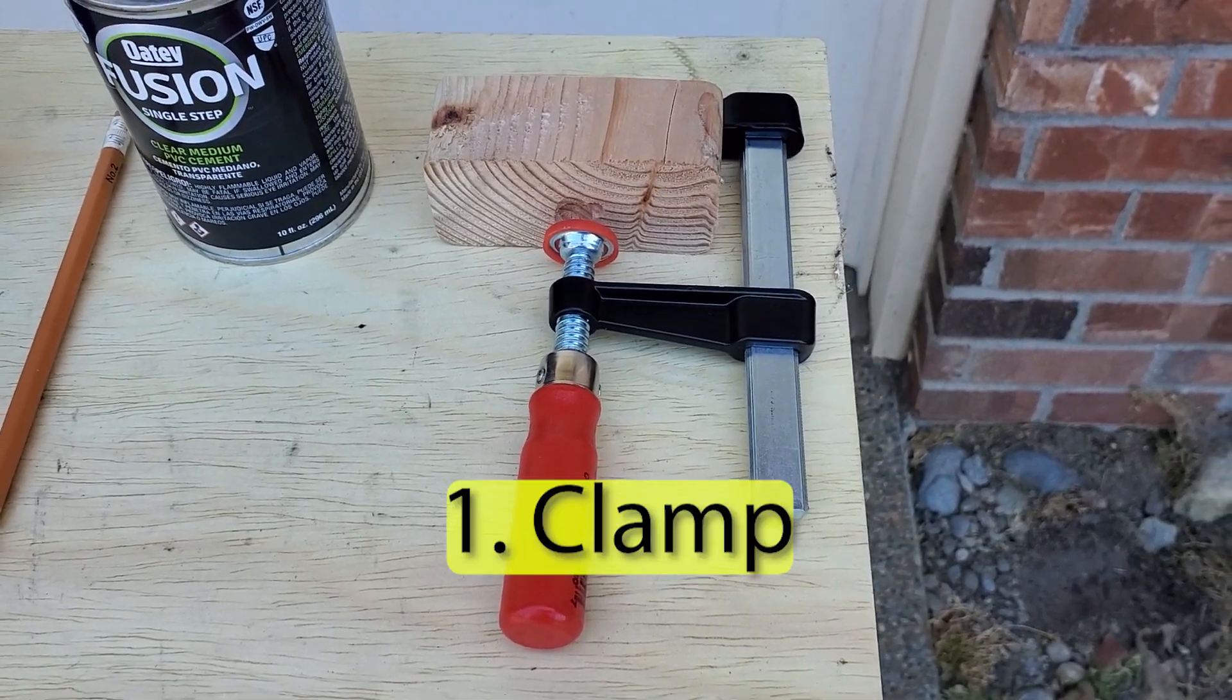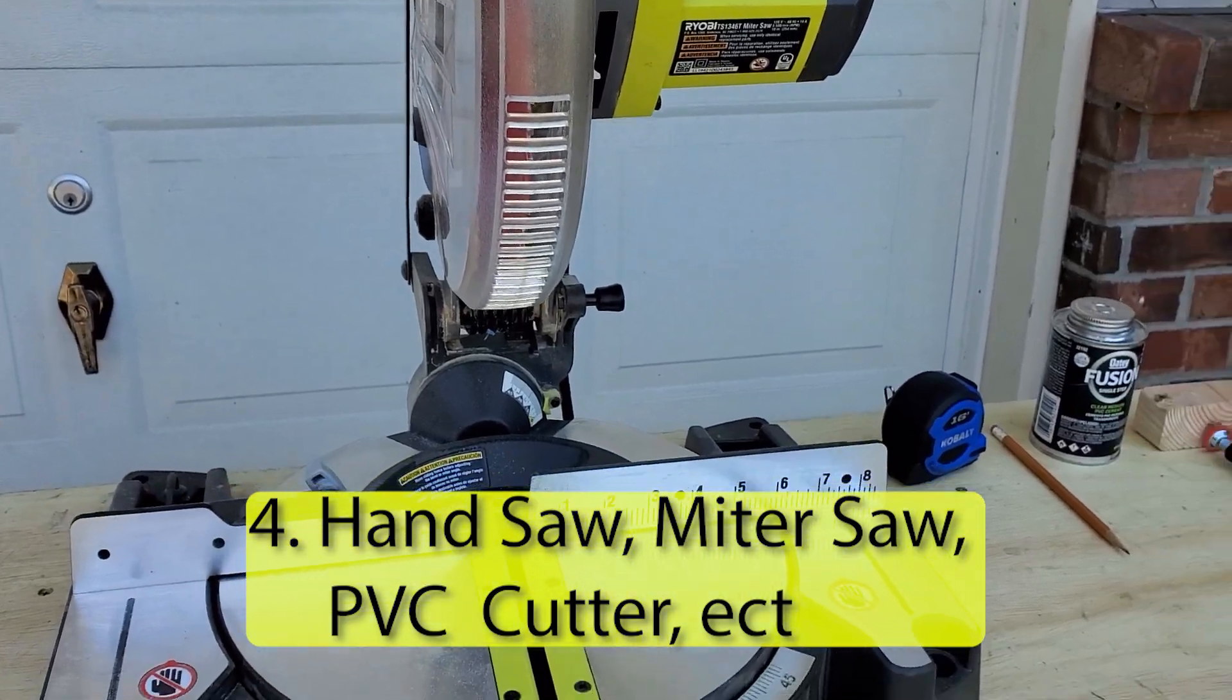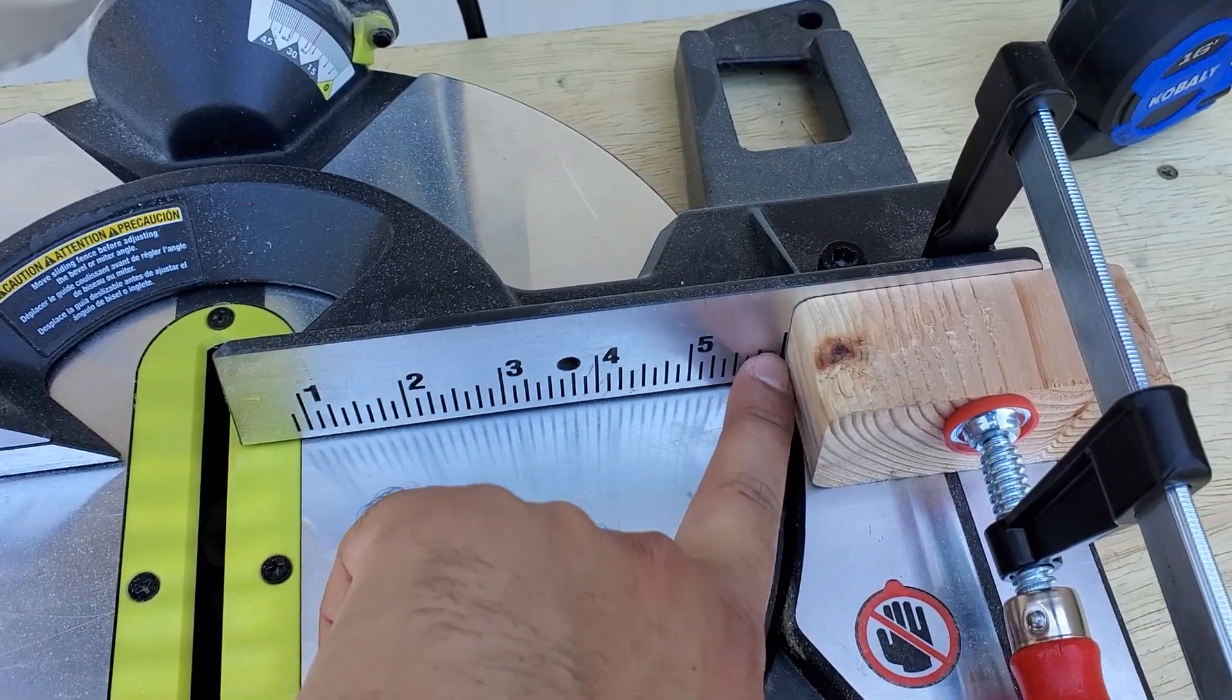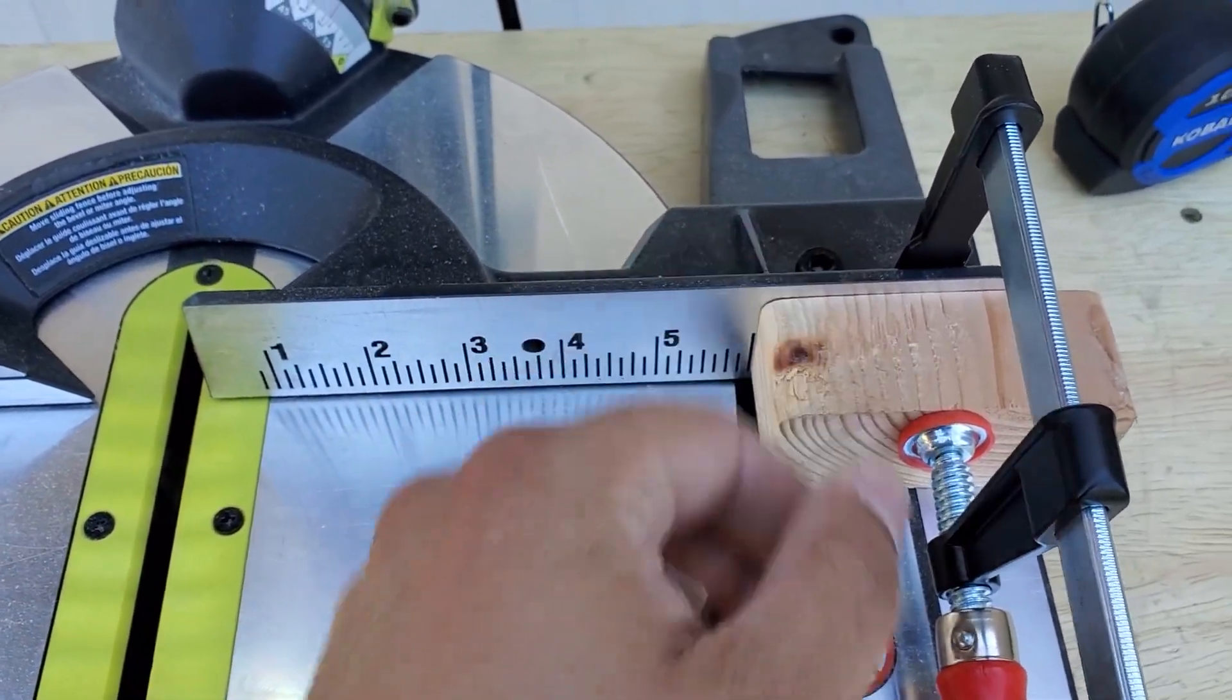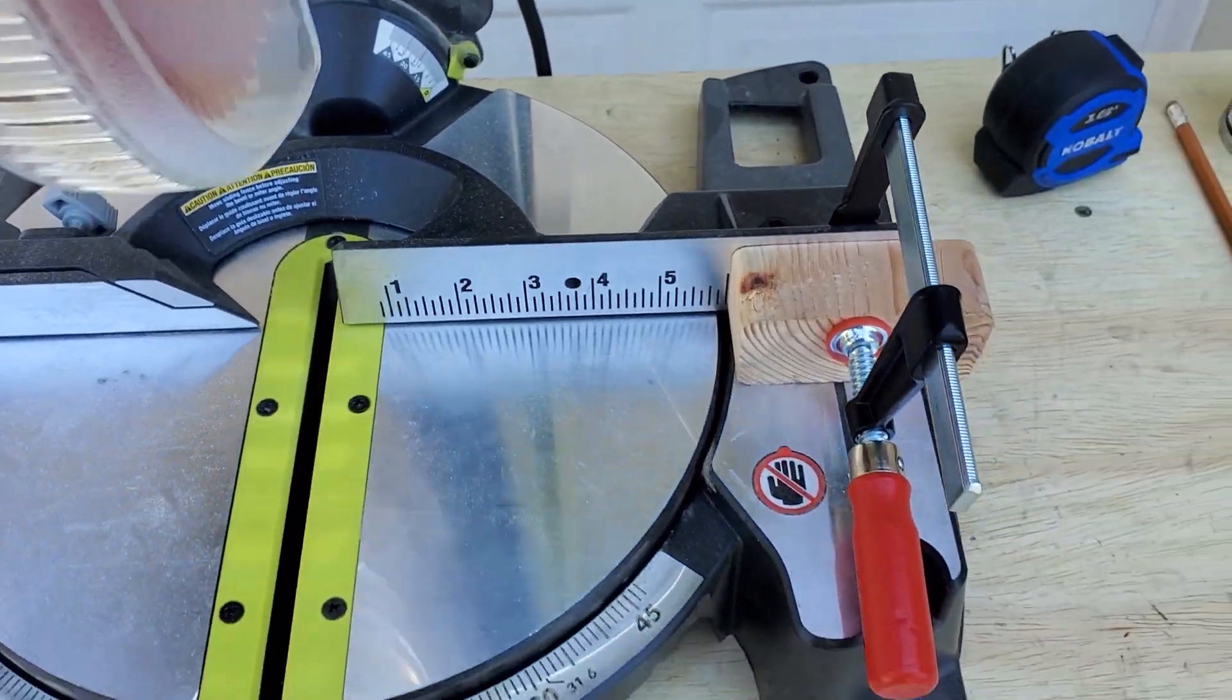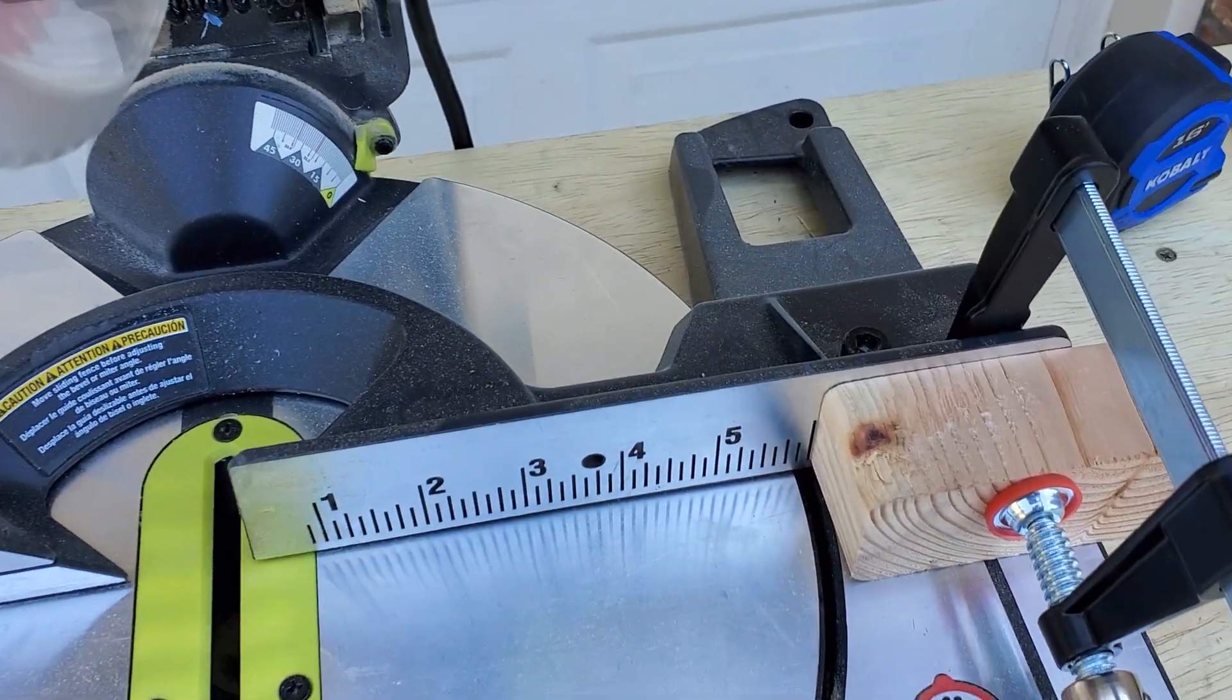Okay, supplies you're going to need: a clamp, wooden block, pencil, measuring tape, to cut the PVC pipe. This is the way you're going to set up the clamp. At 6 inches, that's where you're going to put the wooden block. So the PVC pipe is going to go here, it stops here, you're going to cut, and all your pieces are going to be exactly the same size.